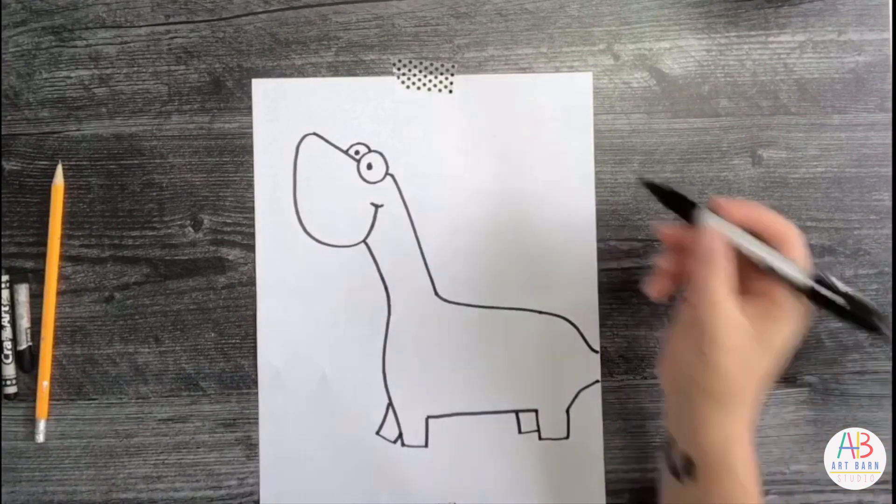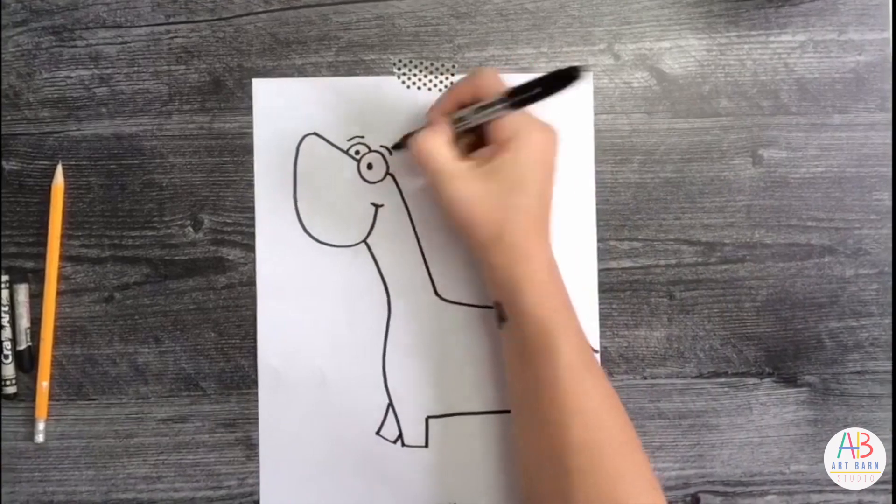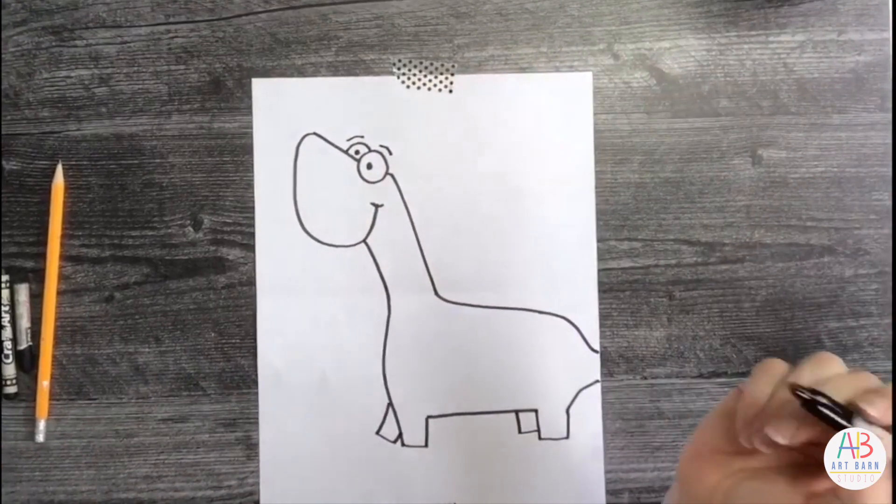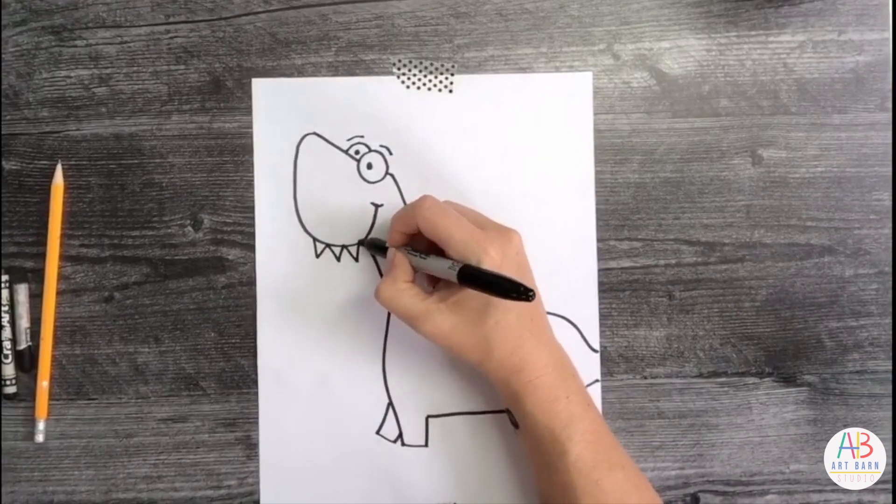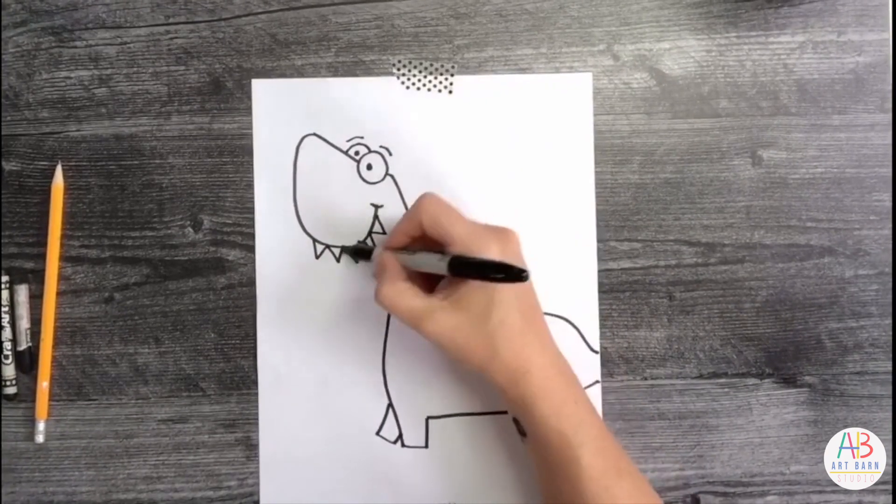So our details: eyebrows, teeth, triangles going almost up to the smile.